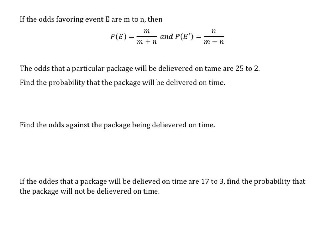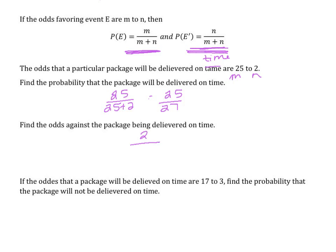If the odds favoring event E are M to N, then the probability of the event happening is M over M plus N, and the probability of the event not happening is N over M plus N. The odds that a particular package will be delivered on time are 25 to 2. The probability it will be delivered on time is 25 over 25 plus 2, which equals 25 over 27. The odds against the package being delivered on time gives us 2 over 2 plus 25, which equals 2 over 27.